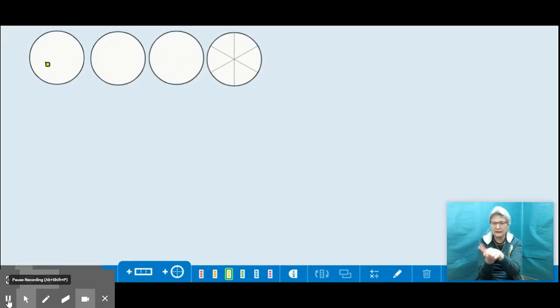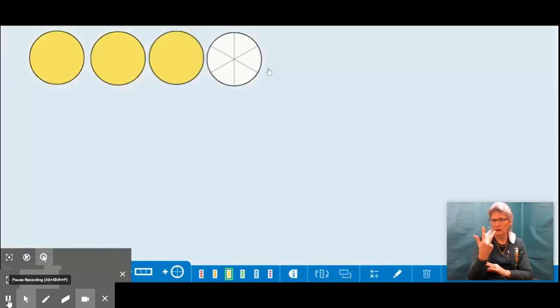So let's start by coloring in what they started with. So one, two, three. One sixth, two sixths, three sixths, four sixths. Okay, so now I've represented what Alejandro started with, three and four sixths.